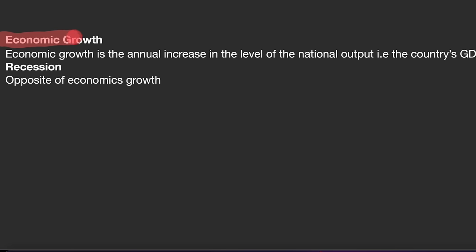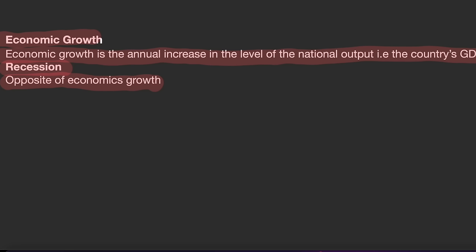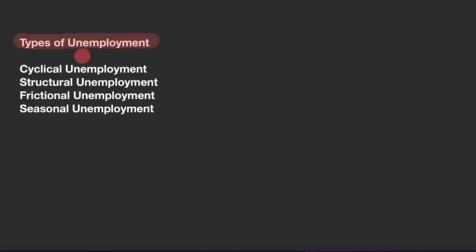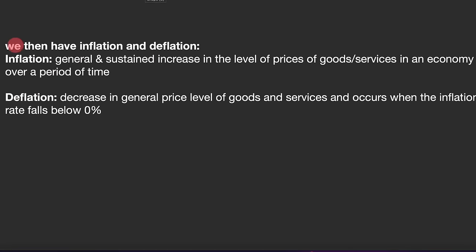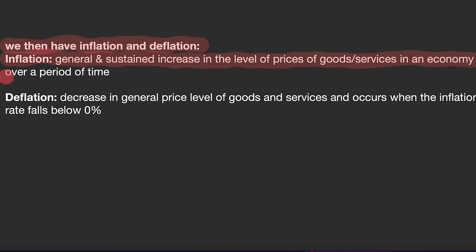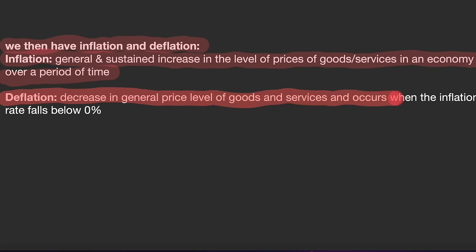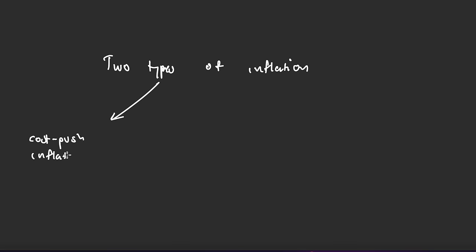Economic growth is the annual increase in the level of national output, measured by a country's GDP. Recession is the opposite of economic growth. Types of unemployment include cyclical unemployment, structural unemployment, frictional unemployment, and seasonal unemployment. Inflation is the general and sustained increase in the level of prices of goods and services in an economy over time, while deflation is the decrease in general price levels and occurs when the inflation rate falls below zero percent. There are two types of inflation: cost-push inflation and demand-pull inflation.